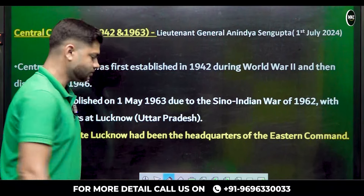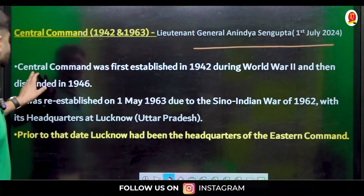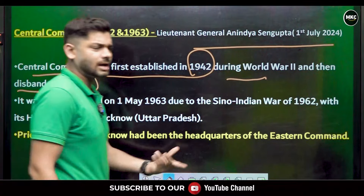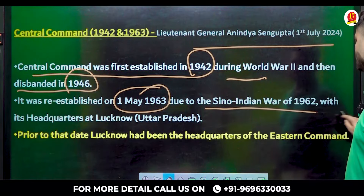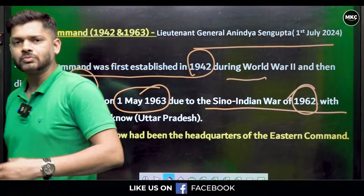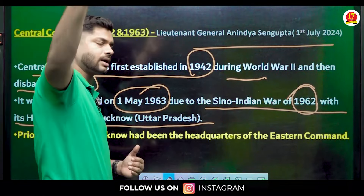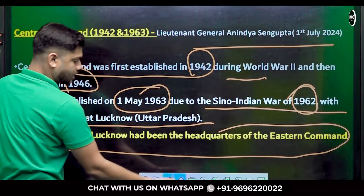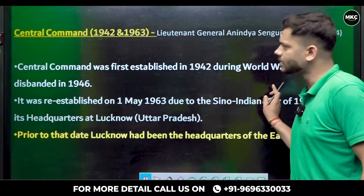Central Command, headquartered in Lucknow — Lieutenant General Anindya Sen Gupta is the current GOC. Central Command was first established in 1942 during World War II, then disbanded in 1946 as the British felt it wasn't needed. It was re-raised on 1st May 1963, post-partition, due to the Sino-Indian War of 1962. Prior to that, Lucknow had been the headquarters of Eastern Command.